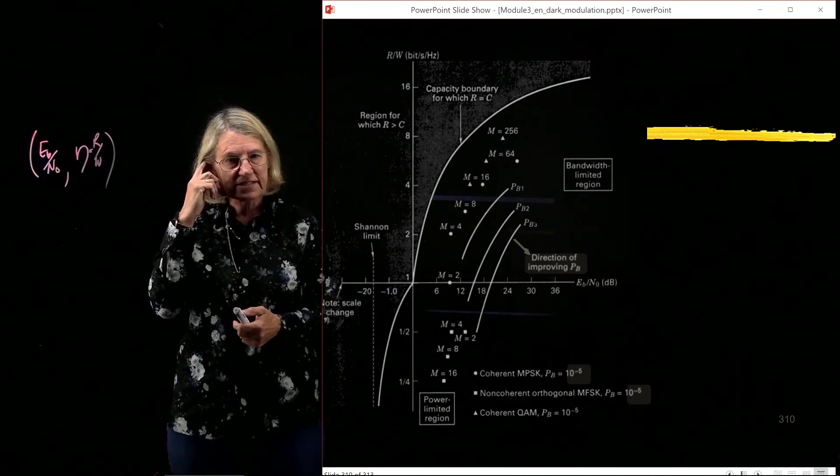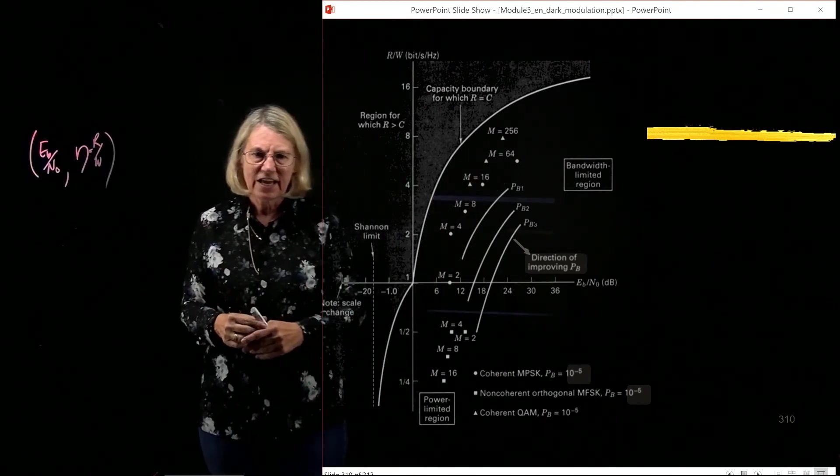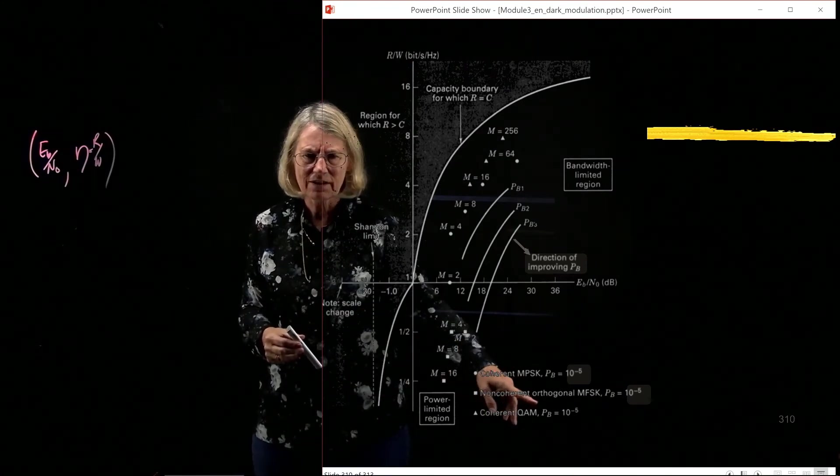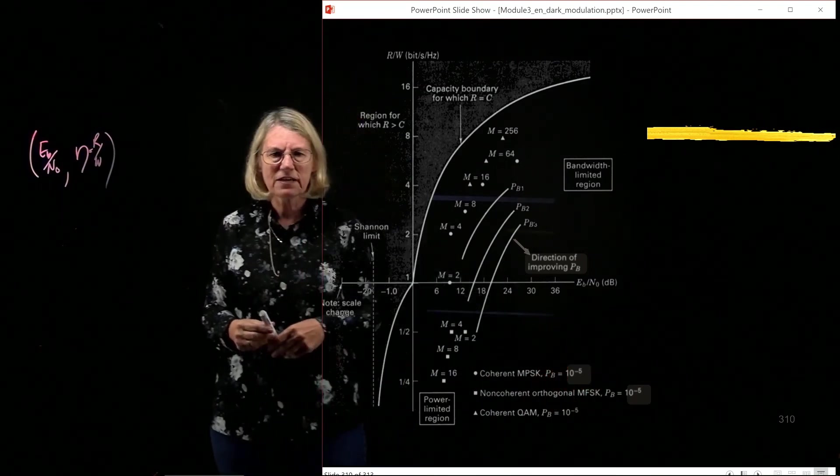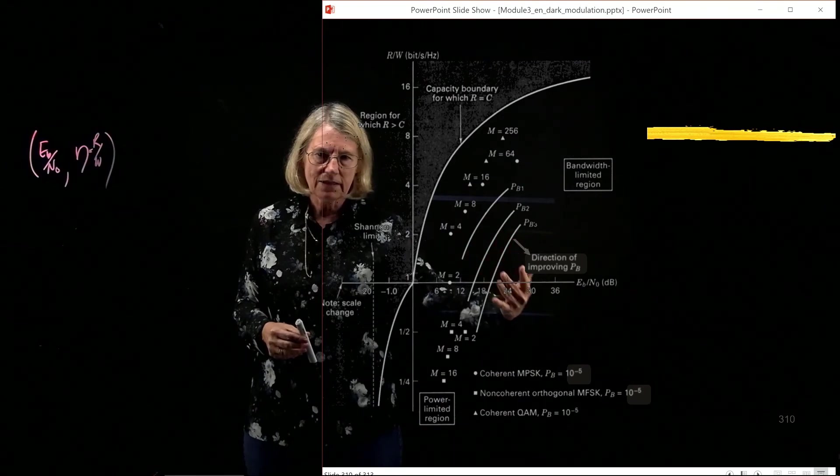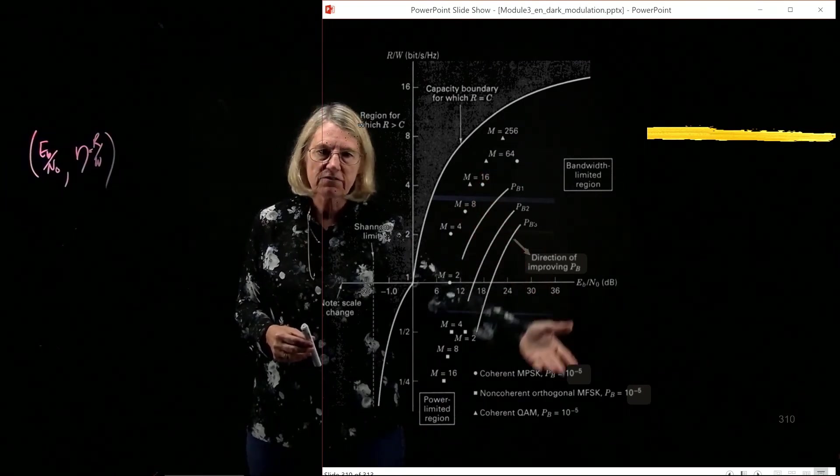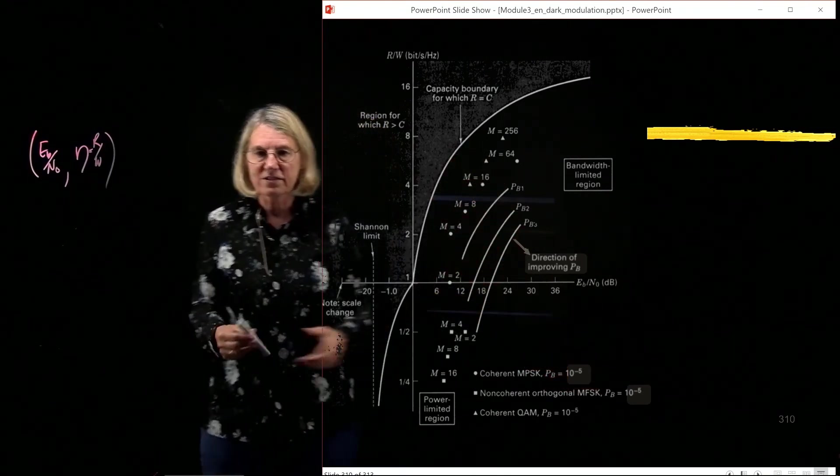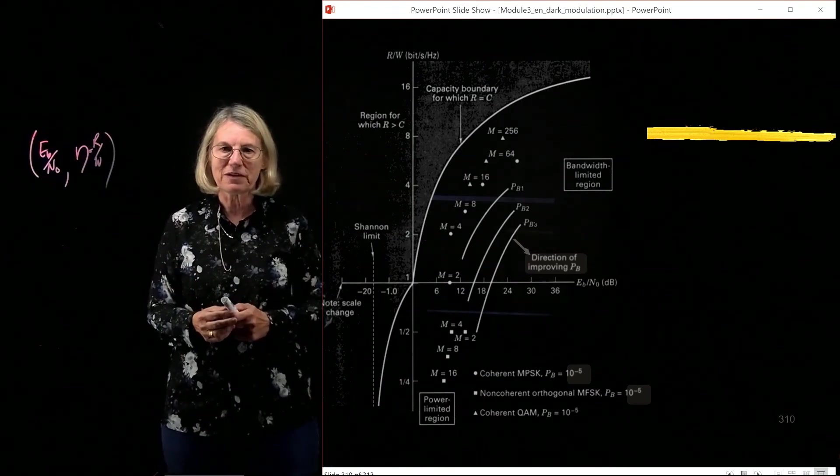I had mentioned also that this was picked—these points were selected in order to have a certain bit error rate, probably a bit error rate of 10 to the minus 5, I believe. And that if I were to do different values instead of 10 to the minus 5, that I would have different points. So it depends on the parameterization you choose for the spectral efficiency plane.